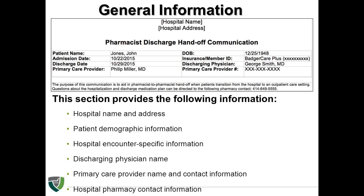It provides prescription insurance information which can be helpful in processing the patient's prescriptions. The name of the discharging physician is also included, which can be used to contact the provider for any questions with the patient's discharge prescriptions. It provides the patient's primary care provider name and phone number so the community pharmacy can contact the patient's primary care physician if necessary. The hospital pharmacy contact information is also included, which can be used as another source if questions regarding discharge medications come up.